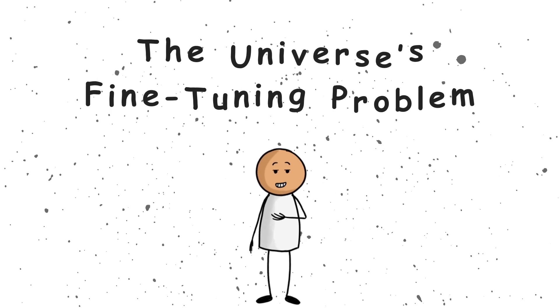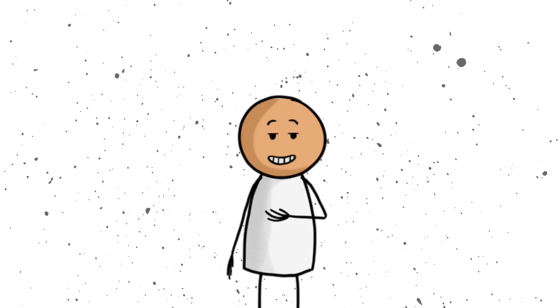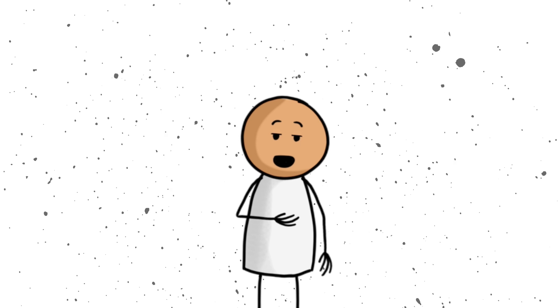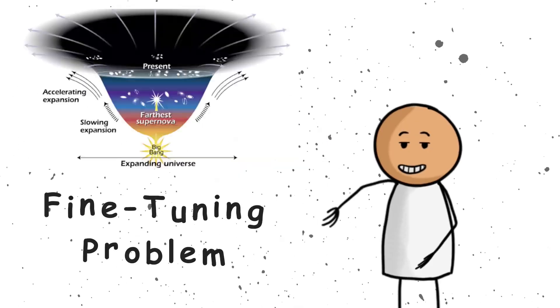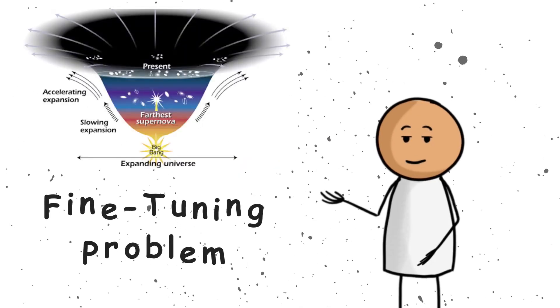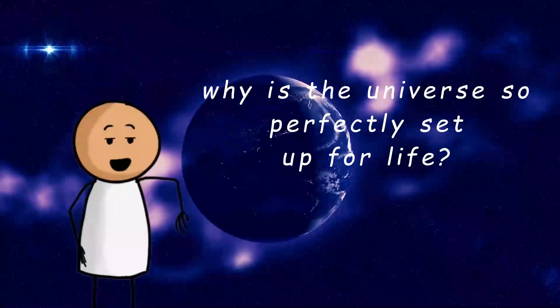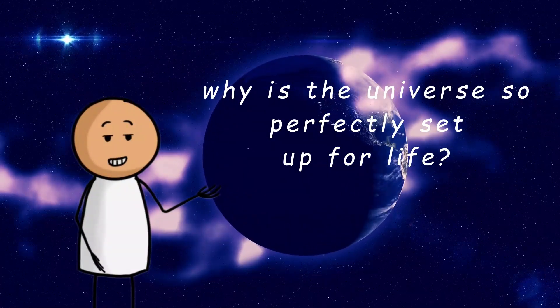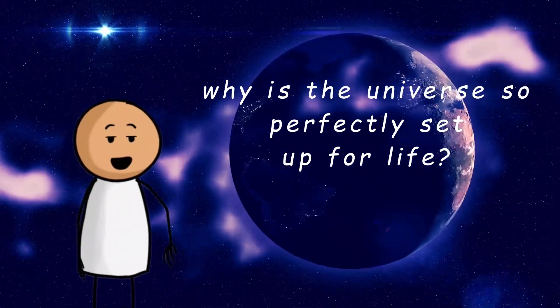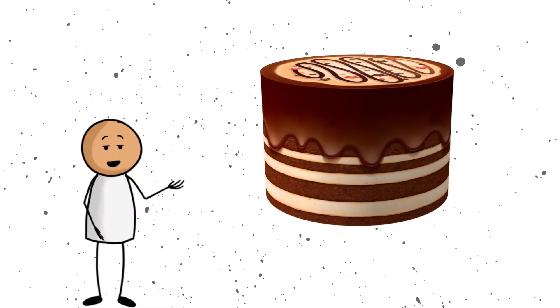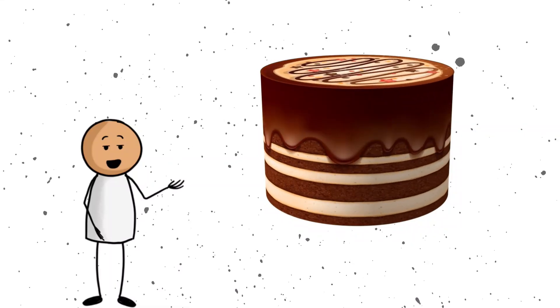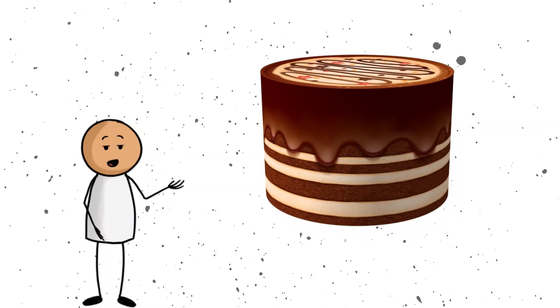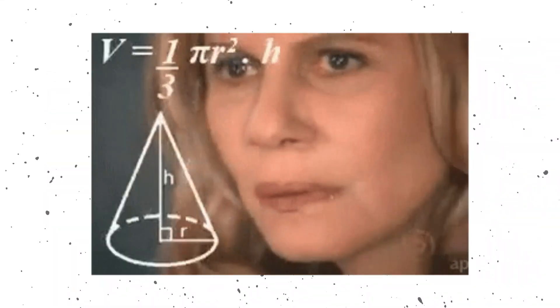7. The universe's fine-tuning problem. Alright, time for our last mystery of the day, and it is a big one. It is called the fine-tuning problem, and it basically asks, why is the universe so perfectly set up for life? Imagine you are baking a cake. If the temperature is even a little too high, or you use too much salt or forget the flour, you get a disaster.